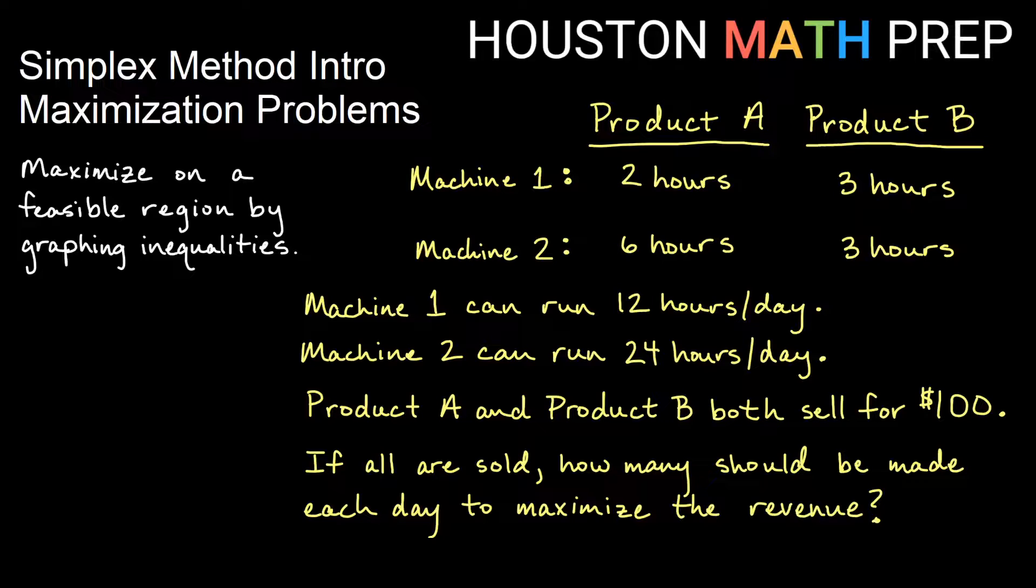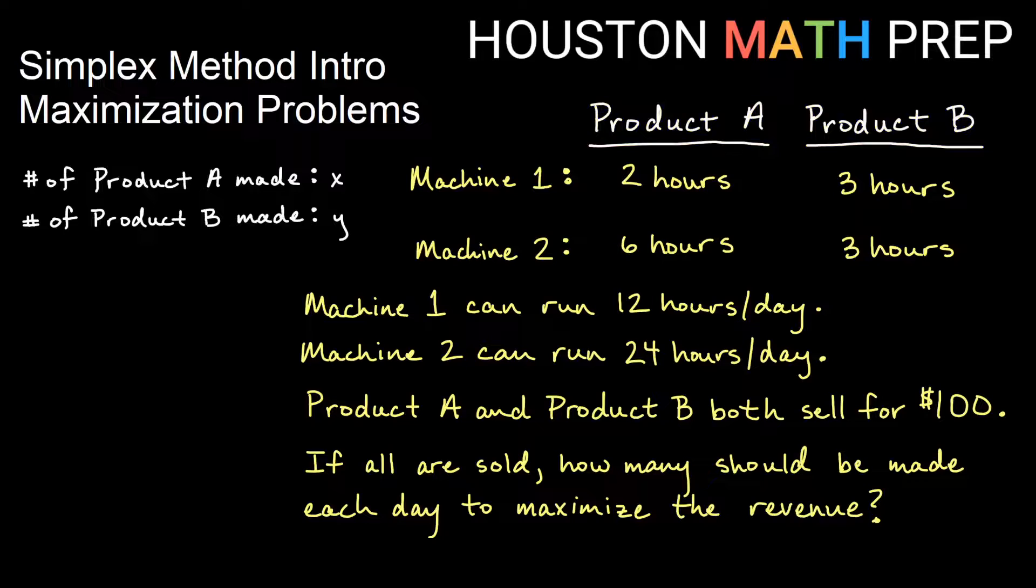So the idea, if you're graphing this on a feasible region, what you might have done is you might have assigned that the number of product A that I make is called x and the number of product B that I make is called y. You notice in here that both sell for $100, so if you want to look at the revenue function that we have, then that would be 100 times x and 100 times y because those are the prices for each of those items.